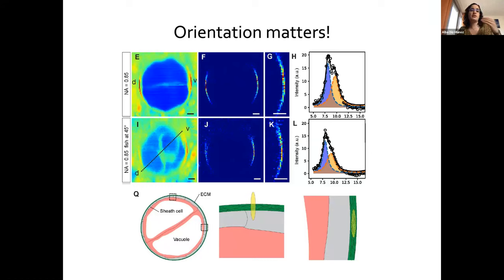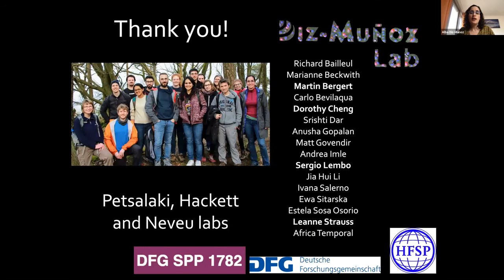The Brillouin microscope is extremely powerful and we can now use it to measure mechanical properties in tissues, but we need to be very careful of the orientation of our sample with respect to the light. I want to thank the lab — the first story was really spearheaded by Martin and Sergio, and the second part was done by Hector and Carlo. We could not have done any of this without our amazing collaborators and funding sources. Thank you for listening.